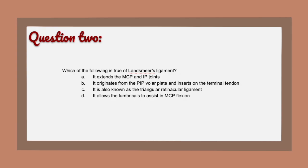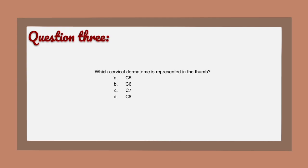Question 2: Which of the following is true of Landsmeer's ligament? A) It extends the MCP and IP joints. B) It originates from the PIP volar plate and inserts on the terminal tendon. C) It is also known as the triangular retinocular ligament. D) It allows the lumbricals to assist in MCP flexion.